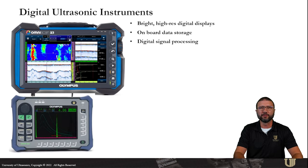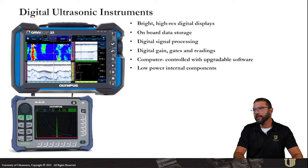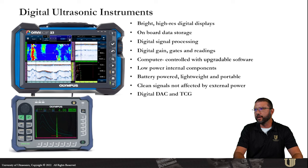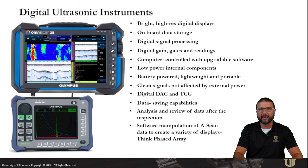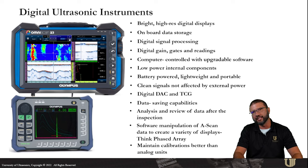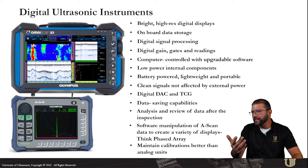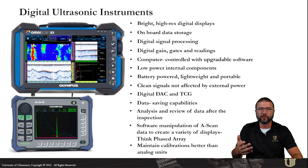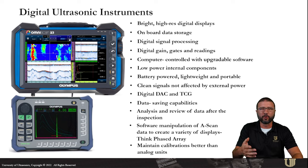They require frequent recalibrations, but they got the job done for a long time. About 20 years or so ago, we transitioned to the digital instruments that we're all familiar with today. They have the bright high resolution displays. You've got onboard data storage and data logging capabilities. You've got digital processing options like gain and gates and your readings. They're computer controlled and the software is upgradable. Low power internal battery components, really clean signals. You've got digital DAC curves and TCGs, data saving capabilities. You can analyze and review the data after the fact. You've got software manipulation to create a lot of different images based off of your raw A-scan data, like phased array, and they maintain calibrations better than analog units.